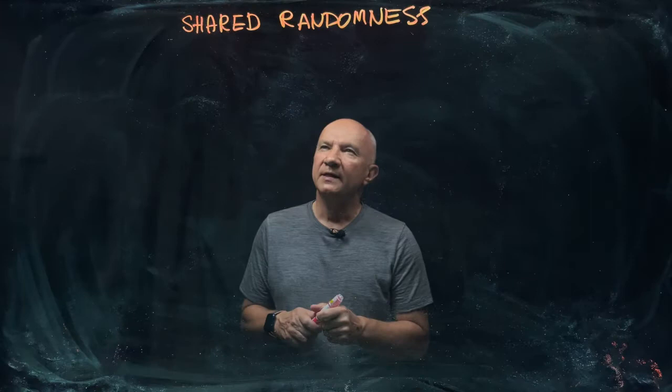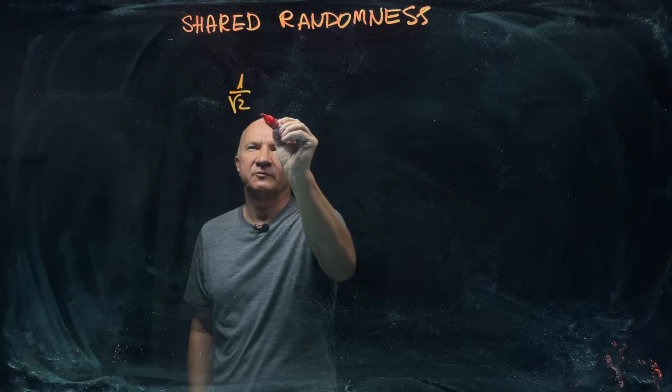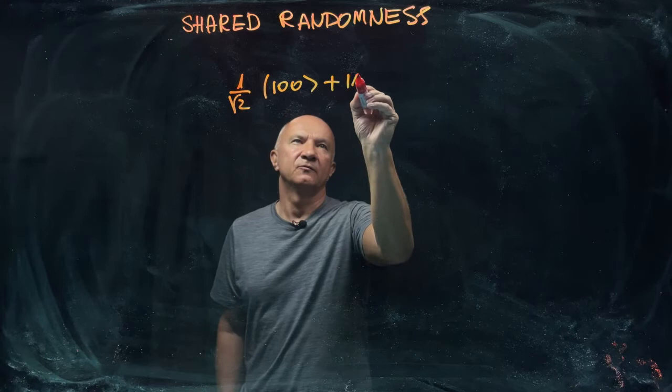When you look at this maximally entangled state, 1 over square root of 2, (|00⟩ + |11⟩), call it omega.